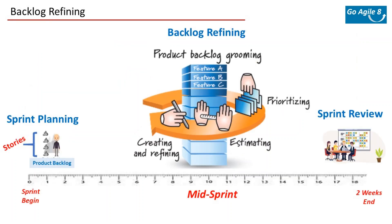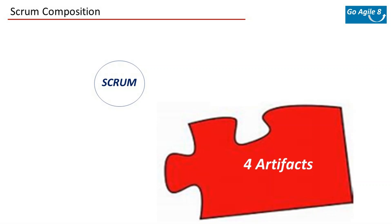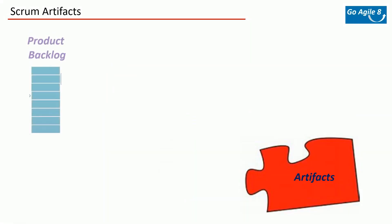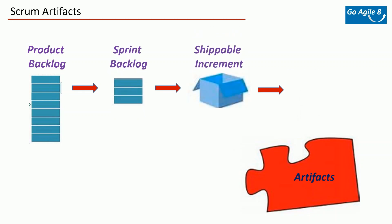After scrum ceremonies, next are scrum artifacts. There are four artifacts — people also call them work products. Scrum artifacts provide key information that the scrum team and stakeholders need to be aware of to understand the product under development, the activity done, and the activity being planned. The four artifacts are: one, product backlog; two, sprint backlog; three, increment; and four, burndown chart as our metrics.